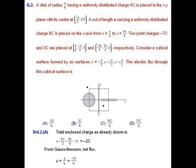According to the diagram, the total charge enclosed by the cubical surface is: the charge of the disk equals 6C divided by 2, which equals 3C; the charge of the rod equals 8C divided by 4, which equals 2C; and of the two point charges, only one (-7C) is enclosed by the cubical surface. So the total enclosed charge is 3C + 2C - 7C = -2C.